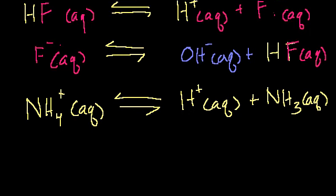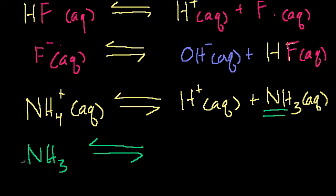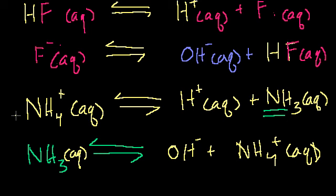We could do the same thing for ammonium and ammonia. We could write ammonia as a base: NH3 is in equilibrium as a weak base — it can grab a hydrogen from its surrounding medium and become NH4 plus in aqueous solution. It probably grabbed that hydrogen from a water molecule, which then becomes OH minus. So ammonia is a weak base, and ammonium is a weak acid. These are equivalent reactions.